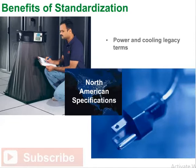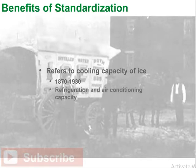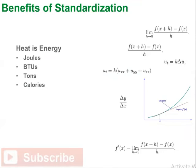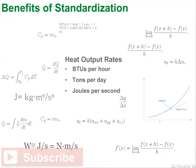In North America, specifications for power and cooling capacity are still often provided in the legacy BTU and tons terms. The term 'tons' refers to the cooling capacity of ice — a relic of the period from 1870 to 1930 when refrigeration capacity was provided by daily delivery of ice blocks. Other parts of the world use specifications such as joules or calories in addition to BTUs and tons. Common measures of heat output rate are BTUs per hour, tons per day, and joules per second.